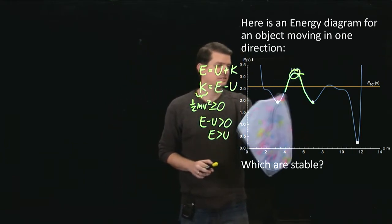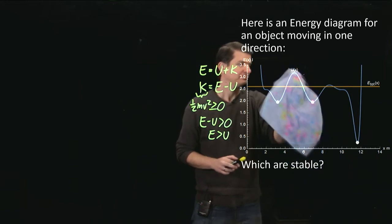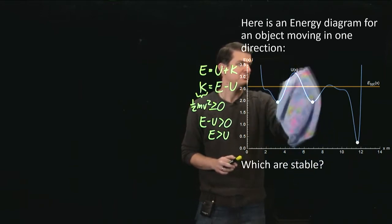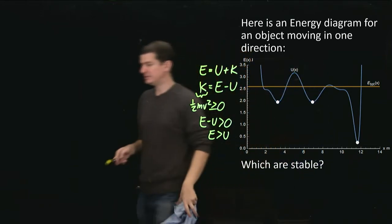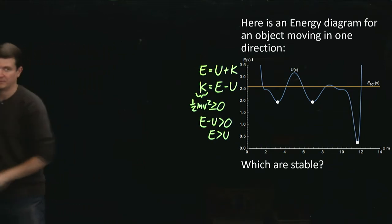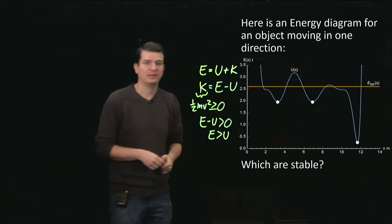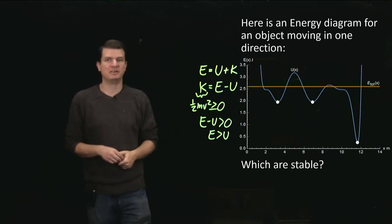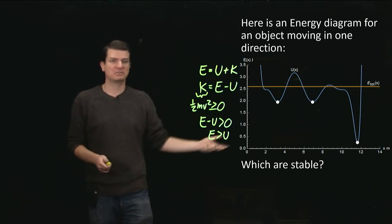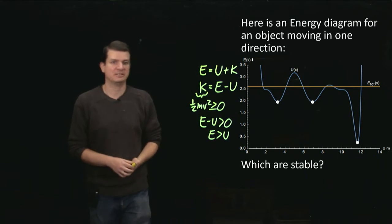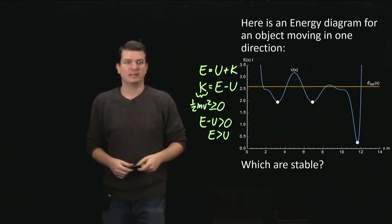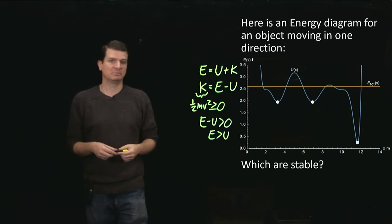The only points that are stable are those points down at the bottom of any of these little valleys because that's where the ball is going to roll to if it's a ball and we're thinking about these as being hills and valleys for real. And that conceptual motivation actually holds true. You're always trying to find lower potential energy as we said. So you're always going to be moving and then you're looking at a local minimum. That's where your stable points are.